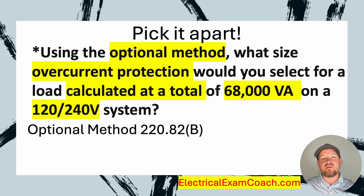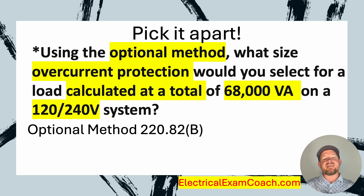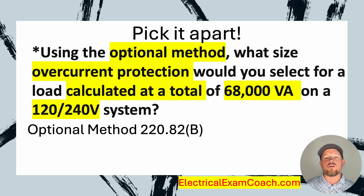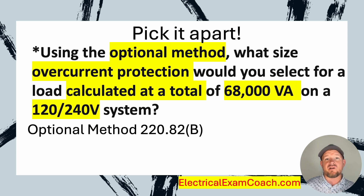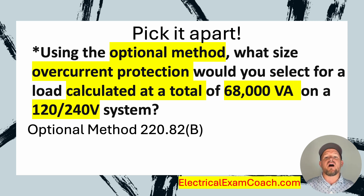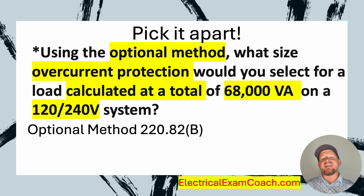I need to keep in mind what we are actually doing here. I have to select the overcurrent protective device — that's just a big word for breaker or fuse. The question has given me a calculated total of 68,000 VAs, and I also need to know what the system voltage is.